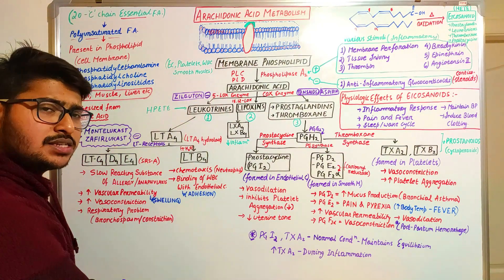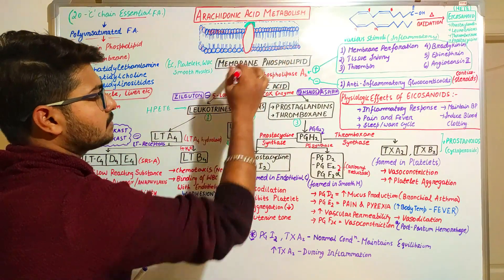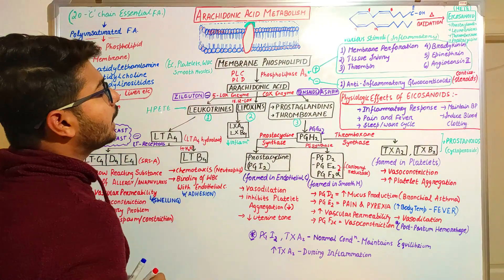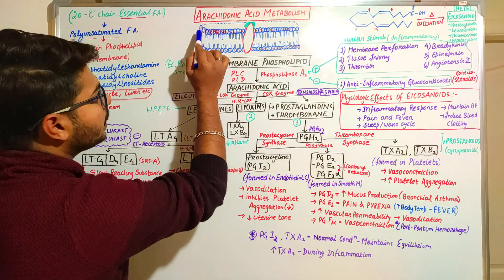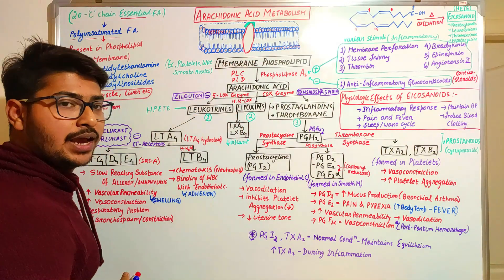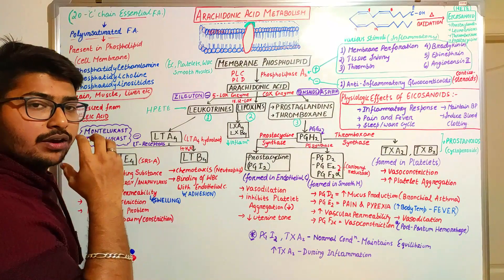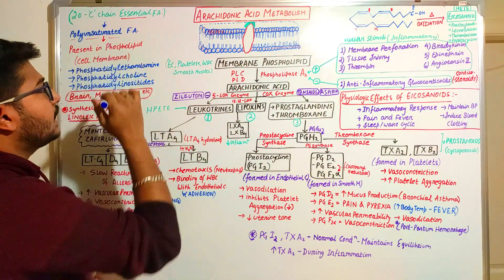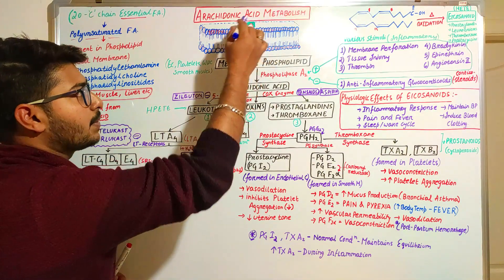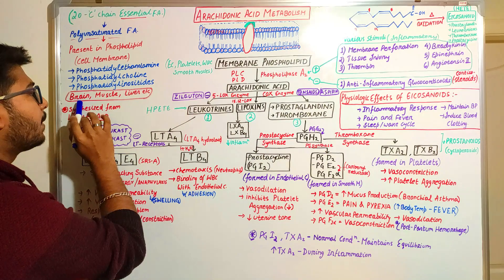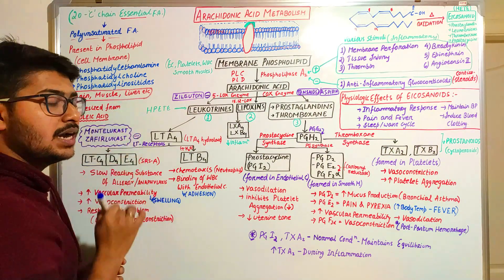Where can we find arachidonic acid? We find it in the cell membrane. The plasma membrane consists of phospholipids, which have a circular head component and two linear fatty acid chains. These fatty acid chains consist of arachidonic acids. So arachidonic acid is a component of phospholipids, and phospholipids are present in the cell membrane — mostly found in brain, muscle, and liver.